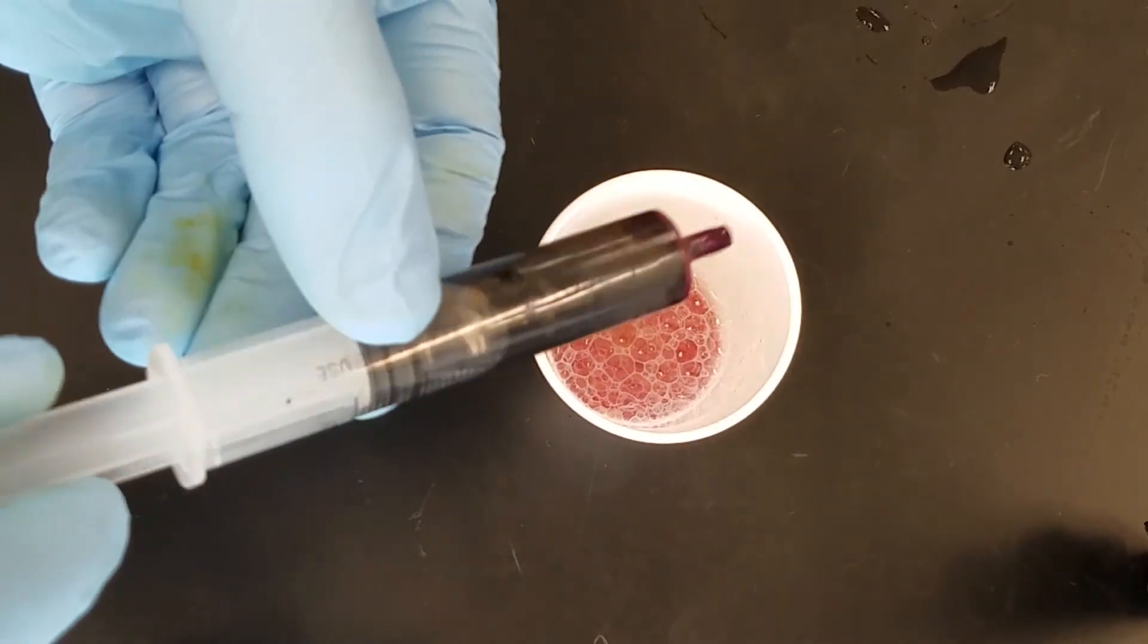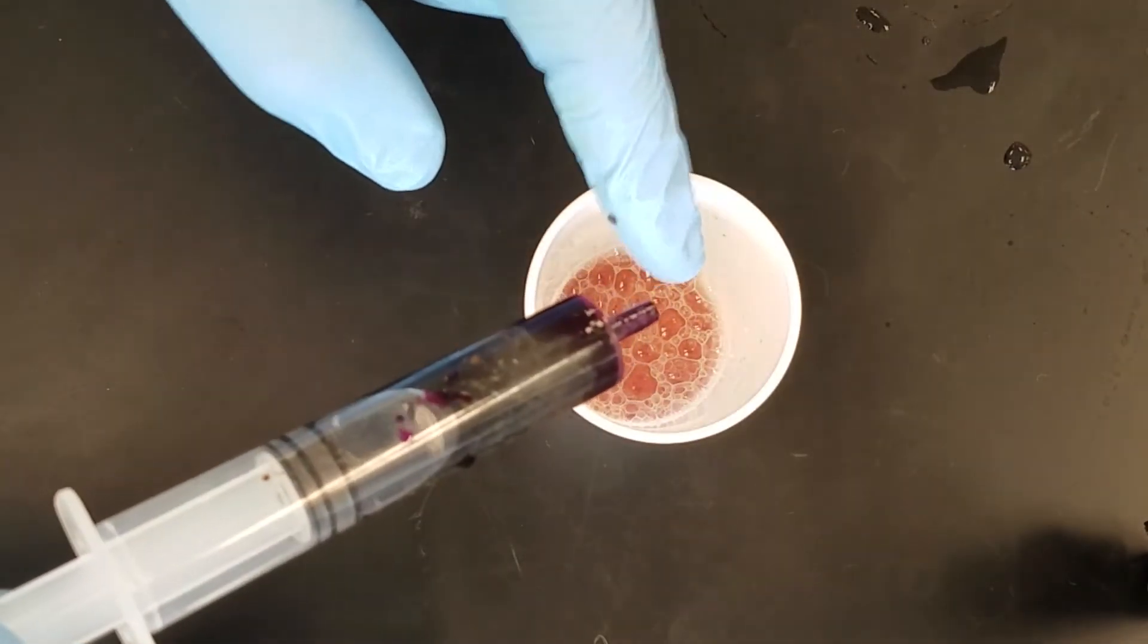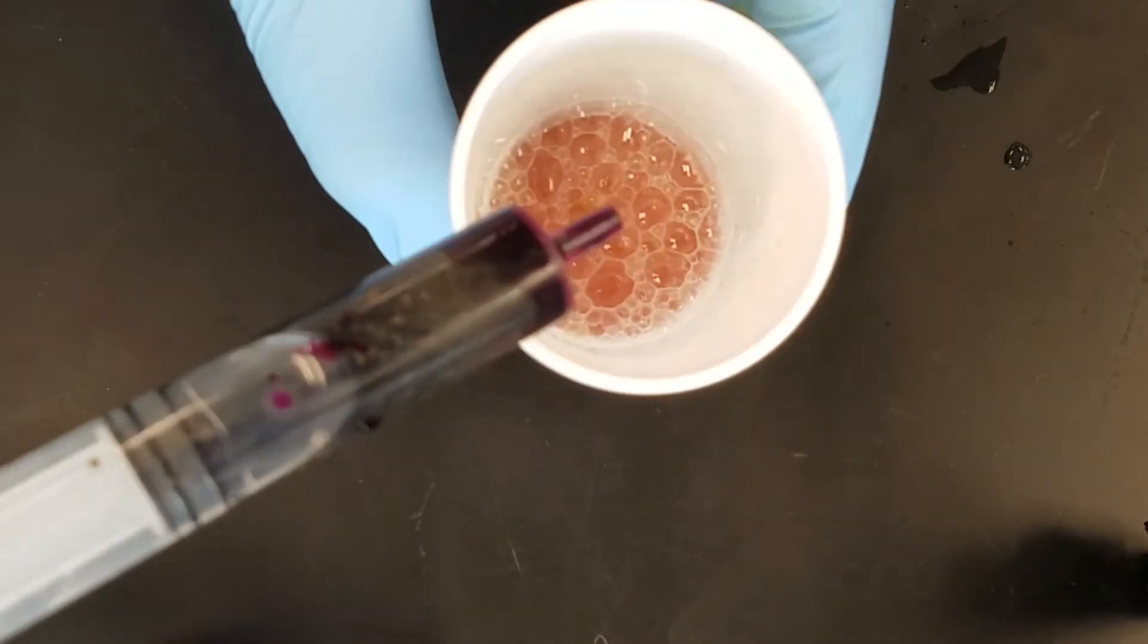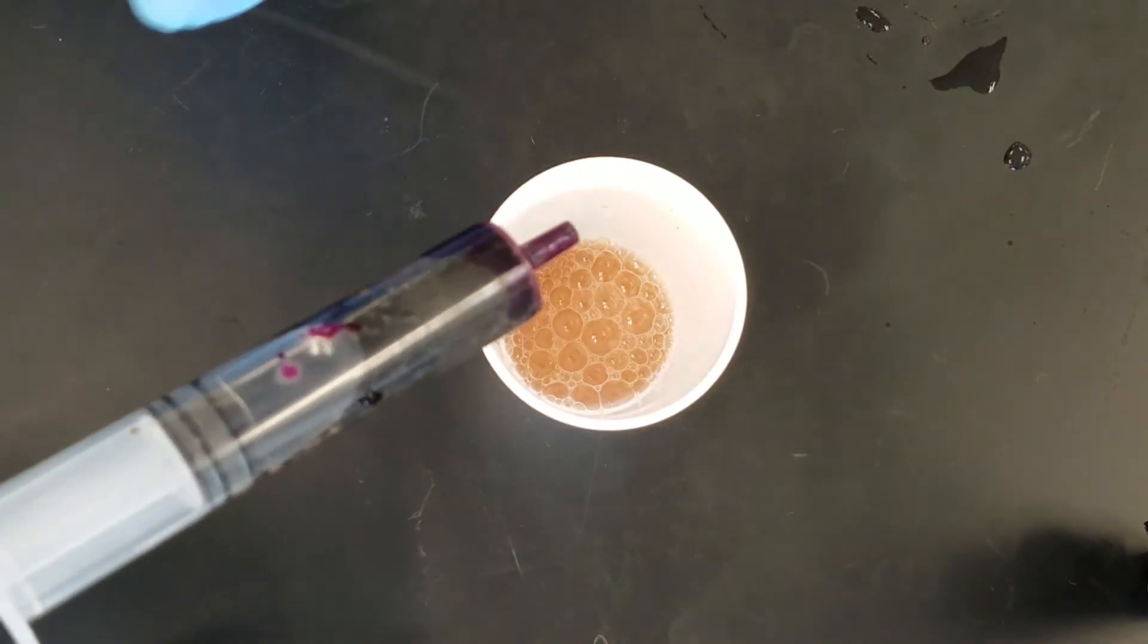You're going to keep adding potassium permanganate until this happens. I've reached a point of no return. The amount of potassium permanganate that you add until it turns a purplish color or brownish color is exactly the amount of hydrogen peroxide that was in this container.